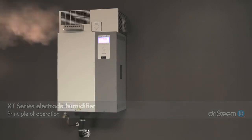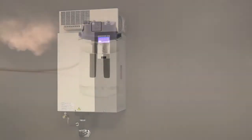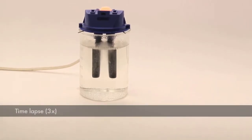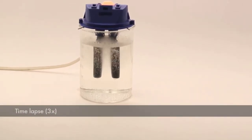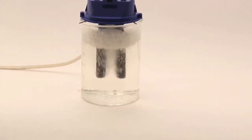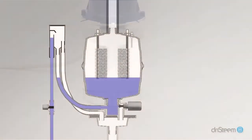Dry Steam XT series electrode steam humidifiers operate on the principle that electrical current in conductive water causes heat. Enough current between submerged electrodes in conductive water causes enough heat to boil the water into steam, and it works very predictably.